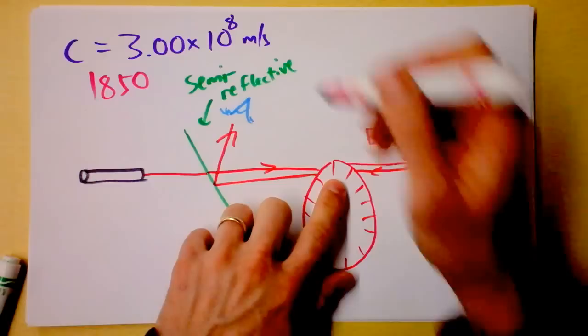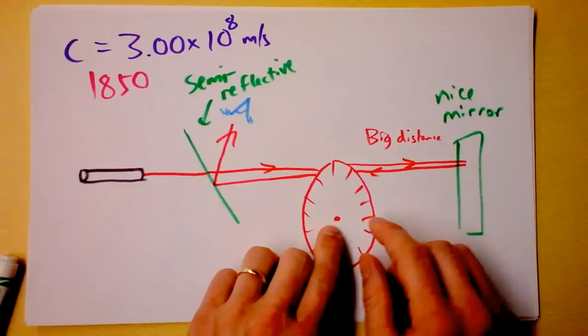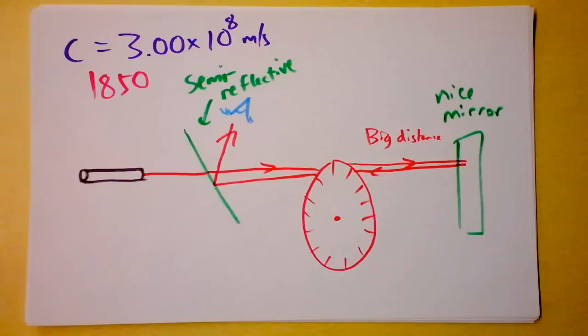Pretty ingenious experiment, if you ask me. He had gears, and he knew very well how precisely he was rotating the sucker, and he managed to get the speed of light to some very good accuracy, backing up Maxwell's observations of just a few years previous.